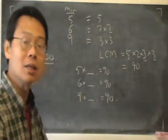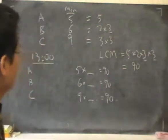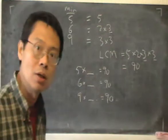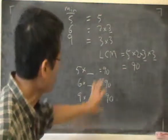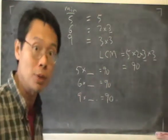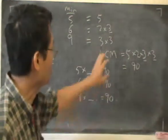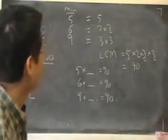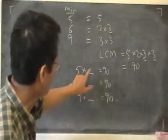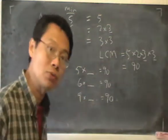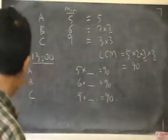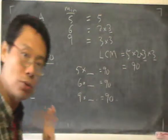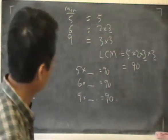At exactly ninety minutes after 1pm the three buses would happen to leave together again from the bus station, and this is the smallest possible time because it's the LCM. You can work out the individual multipliers yourself, but that's not really needed for the question.